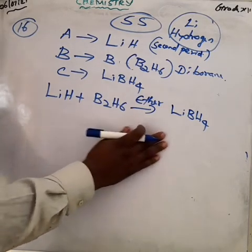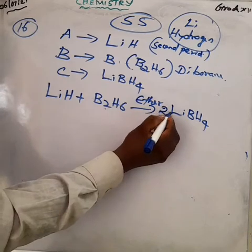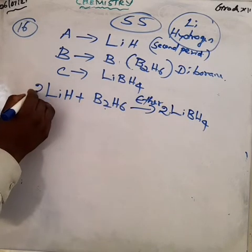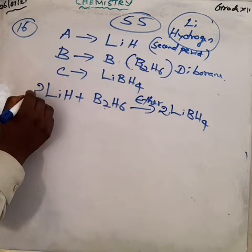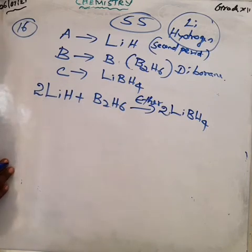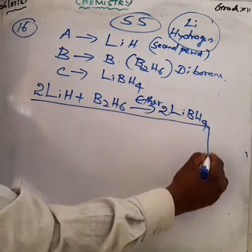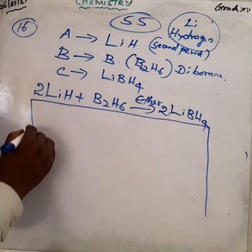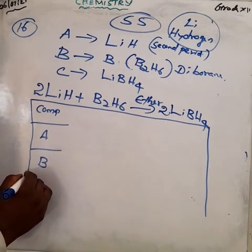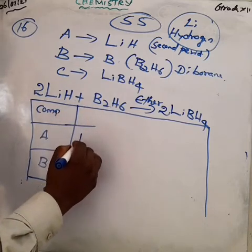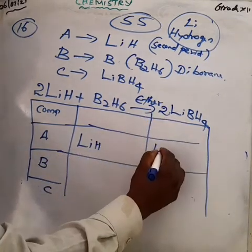Now how can we balance the equation? On the reactant side, diborane has 2 boron atoms, so in the product side also make it 2 LiBH₄. How much lithium is in the product side? 2. So make the reactant side also 2 LiH. Now the equation is balanced. We write the compound names in a table: compound A, B, and C. Compound A is lithium hydride, LiH.